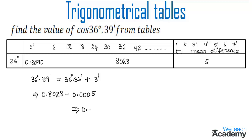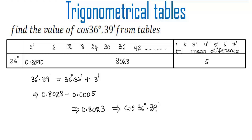We subtract the mean difference: 0.8028 minus 0.0005, which gives 0.8023 as the value for cos 36 degrees 39 minutes. This was a basic introduction on how to solve examples using trigonometric tables. Hope you understood the concept — do like and subscribe to WeTeachAcademy.com. Thanks for watching, have a nice day.